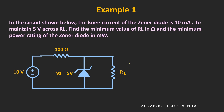In the first example, we have been given a Zener regulator circuit where the knee current of the Zener diode is 10 mA. We have been asked to find the minimum value of the load resistor such that 5V is maintained across it, and also to find the minimum power rating of this Zener diode.